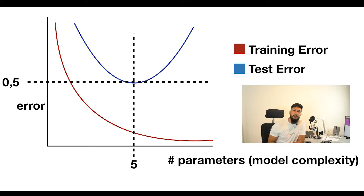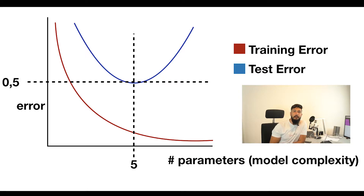As you can see in this figure, this model has a sweet spot at 5 independent parameters and starts to overfit beyond this point.